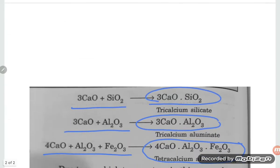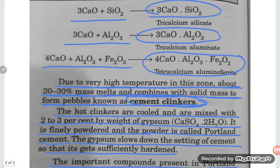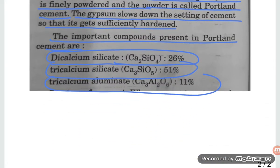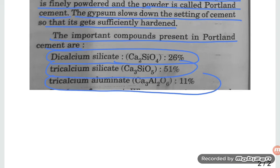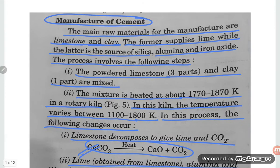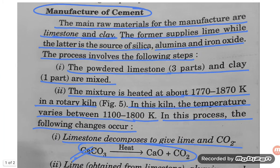In summary, cement is formed by mixing limestone with clay, heating them so that silicates and aluminates are formed, then adding gypsum to the cooled clinkers. The key compounds in Portland cement are dicalcium silicate (26%), tricalcium silicate (51%), and tricalcium aluminate (11%). Thank you so much for watching, dear students.